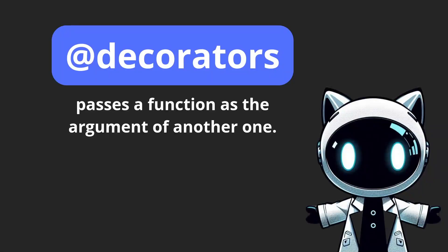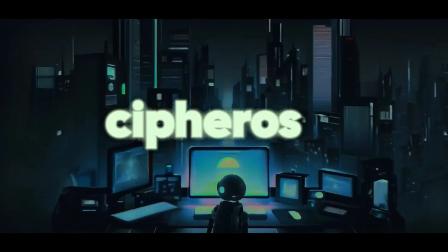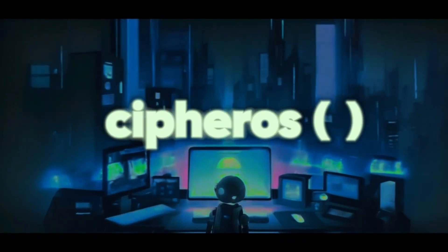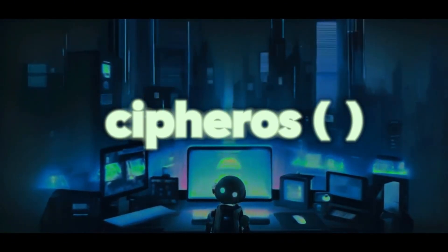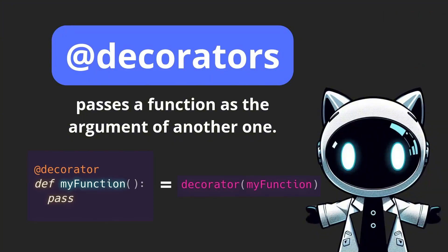First, what are decorators? Basically they pass a function as the argument of another one. This is the syntax to declare the call of a decorator — we use the at symbol and the name of